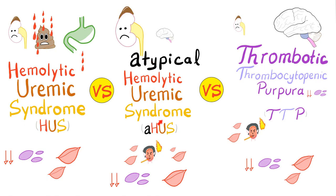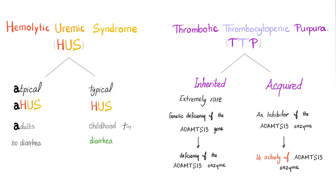Atypical HUS gets a big kidney but a very tiny brain, whereas TTP gets a tiny kidney and a big brain. We divide hemolytic uremic syndrome into atypical and typical. Atypical happens in adults and is diarrhea negative — also known as primary HUS. Typical HUS happens in childhood, is diarrhea positive, and is secondary HUS — secondary to E. coli O157:H7 as well as other conditions.